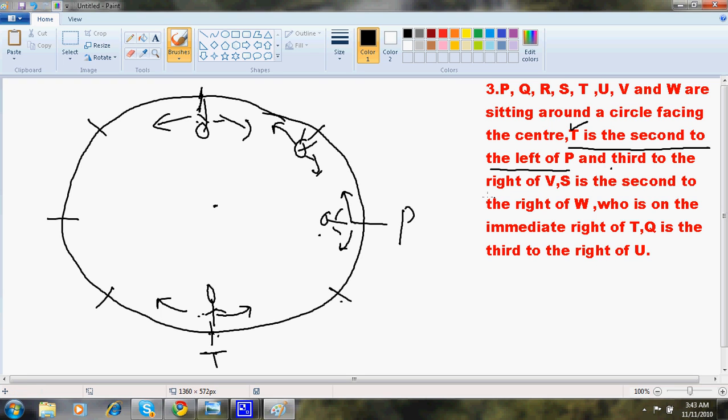And third to the right of V. So obviously the V will be here so that this is this person's right side is this one. So this is the first right, second right and this is the third right. S is the second to the right of W. Now P, T and V I have got. I haven't known anything about S and W. There are so many spaces. I won't touch this.